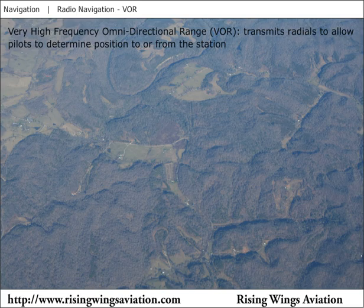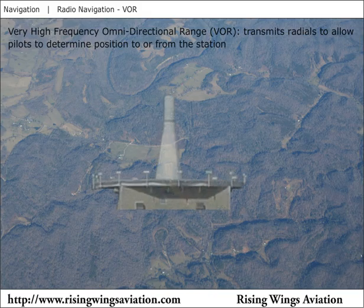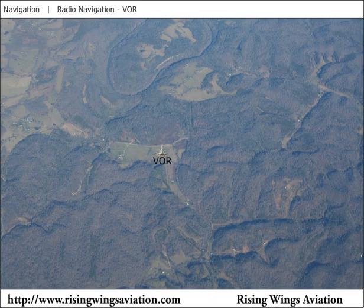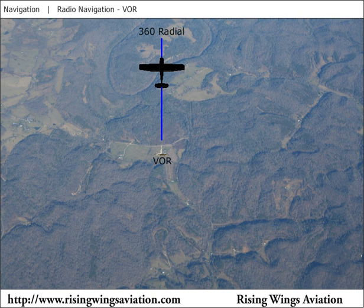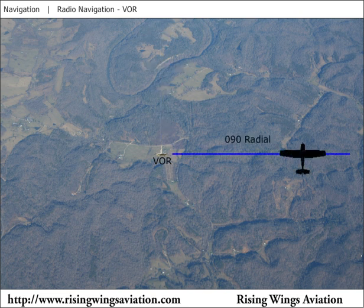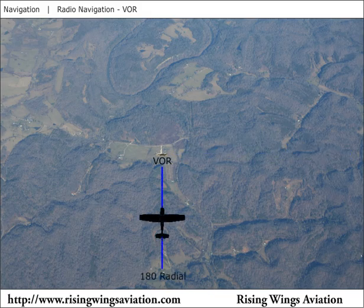Pilots use 360 radials, one for each degree in a circle, to determine position. If the equipment in the airplane says the airplane is on the 360 degree radial, then the airplane is north of the VOR. An airplane on the 90 radial is east, while one on the 180 degree radial is due south of the station.